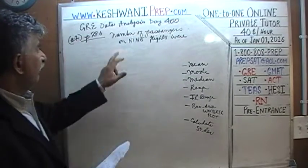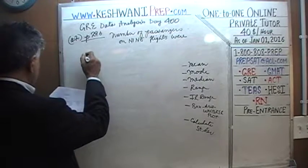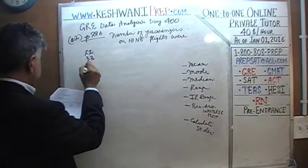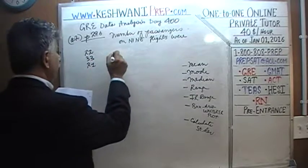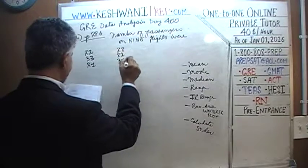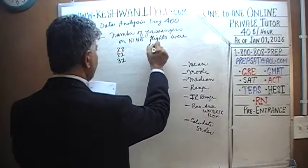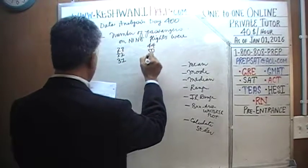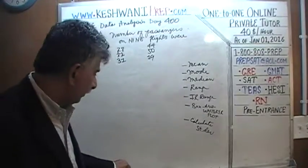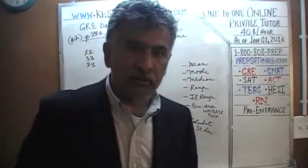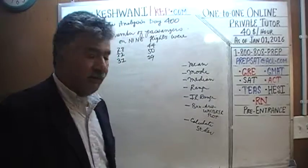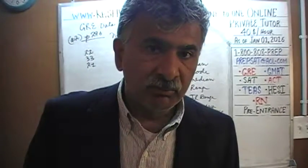The problem says the number of passengers on nine flights were: 22, 33, 21, 28, 22, 31, 44, 50, and 99. Given this data set, the questions ask for the mean, the mode, the median, the range, the interquartile range, the standard deviation, and finally to plot the box and whisker plot.